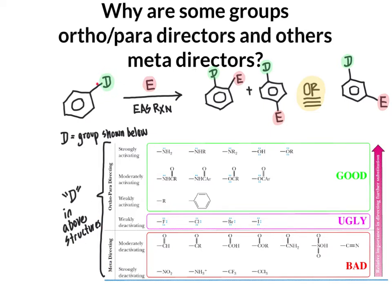That's why I've abbreviated it as D in the generic schematic up top. What we learned in the last video is that depending upon the identity of the directing group, it would either result in an electrophilic aromatic substitution product where the new substituent — the electrophile E — goes to the ortho and para position, in the case of an ortho-para director, or if a meta director was attached to the ring, the final product would correspond to the electrophile going meta to the directing group.